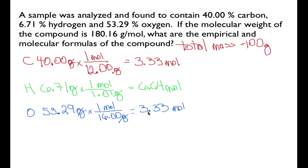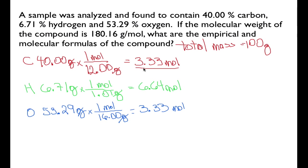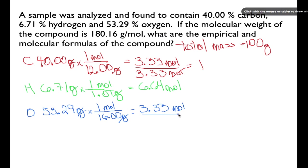Now we have to compare these and find the ratio of the number of moles of carbon to hydrogen to oxygen. The easiest way to do that is to divide each of the molar values by the smallest molar value, which is 3.33. For carbon, 3.33 divided by 3.33 gives us 1. For oxygen, dividing by 3.33 also gives us 1.